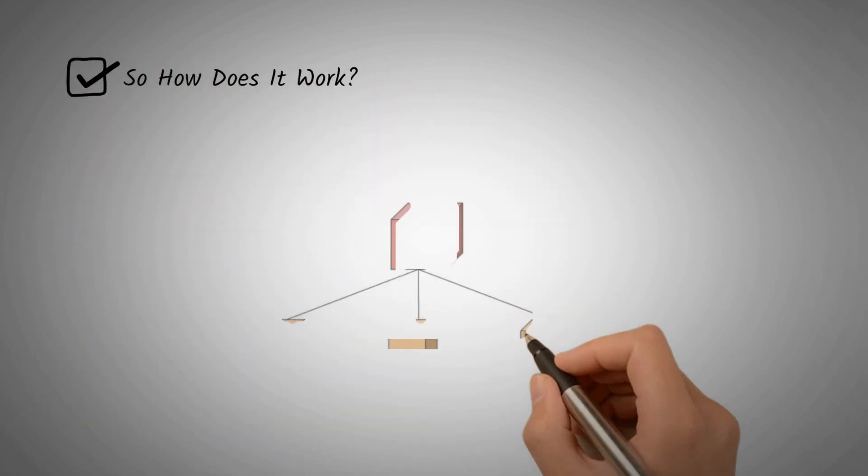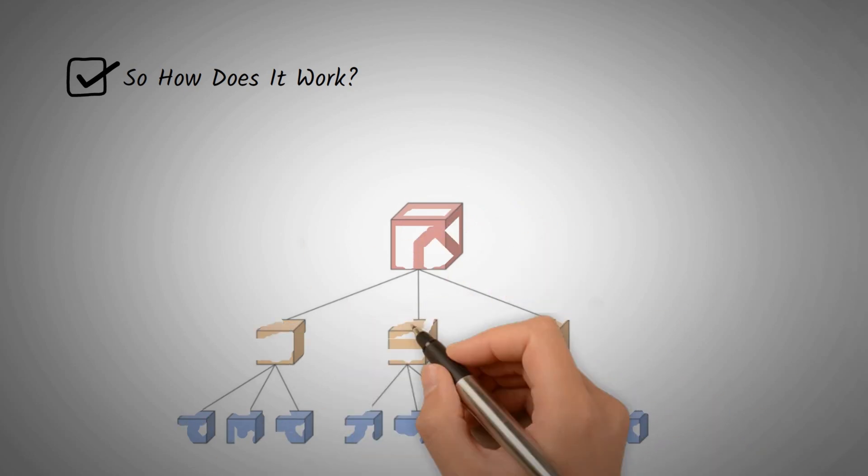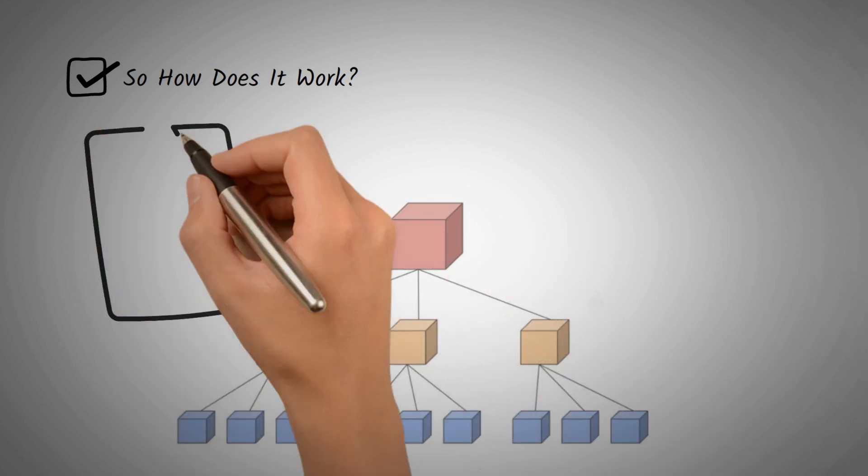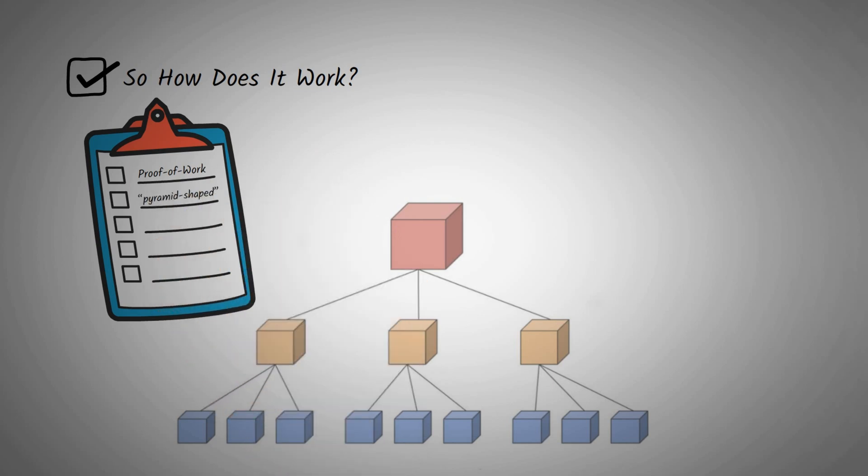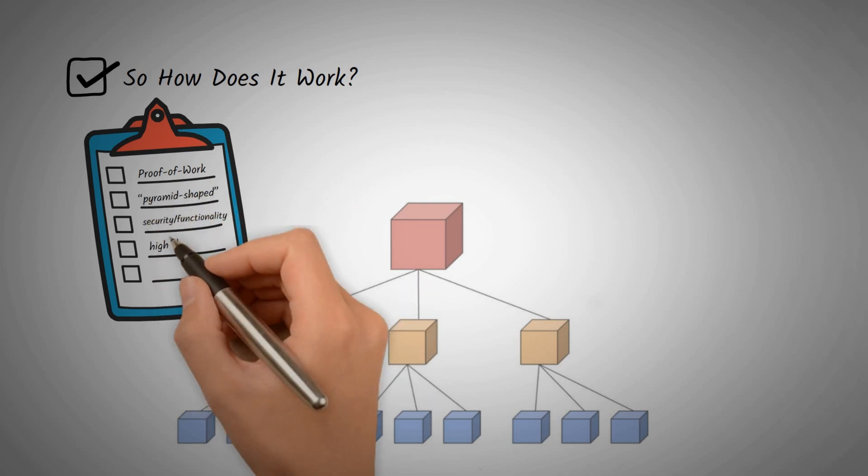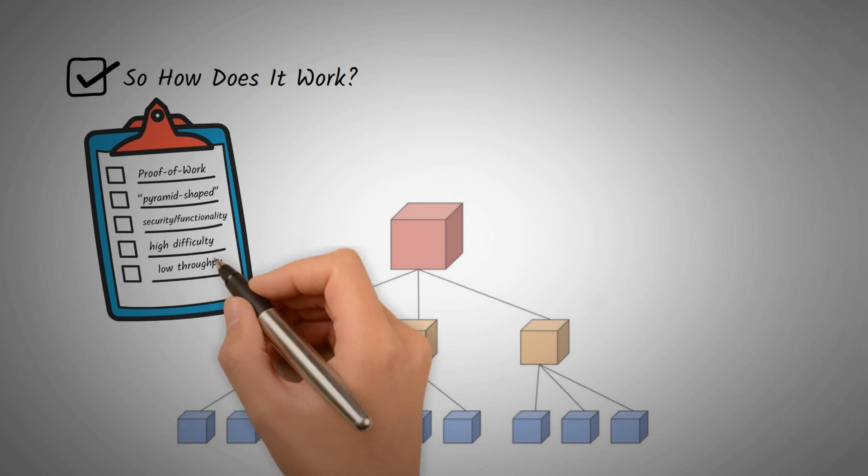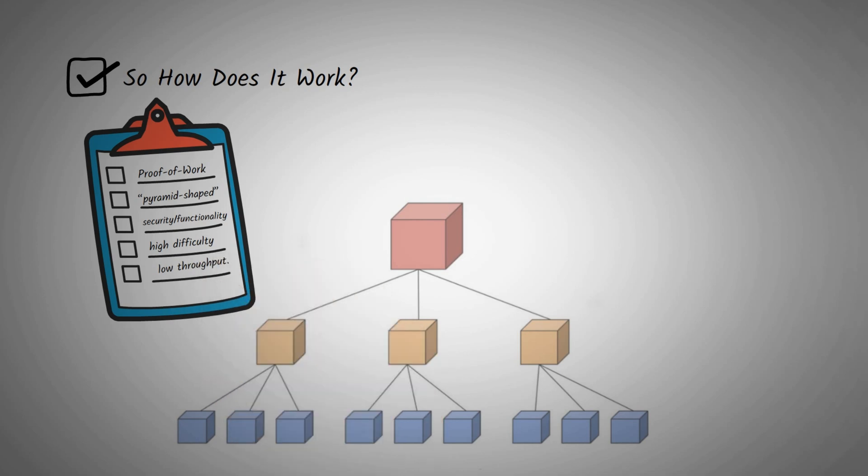So how does it work? Quai Network exists as a proof-of-work network of chains organized in a hierarchical, pyramid-shaped structure. At the core of Quai Network's security and functionality is the Prime Chain, which is mined by all miners. The Prime Chain has a high difficulty and low throughput.